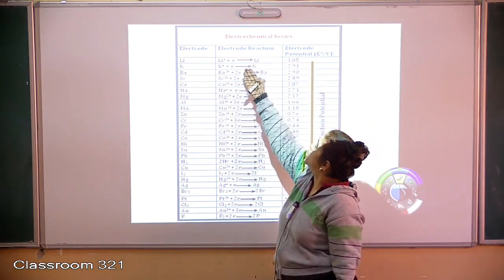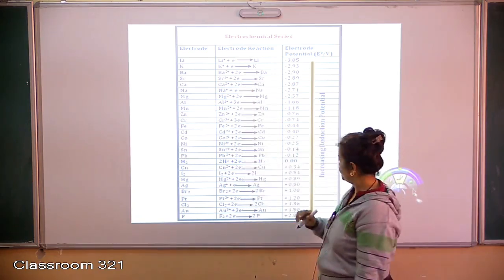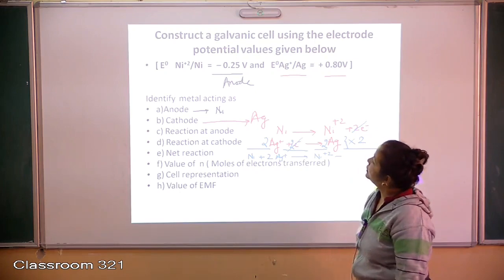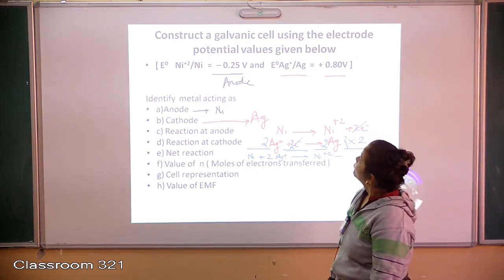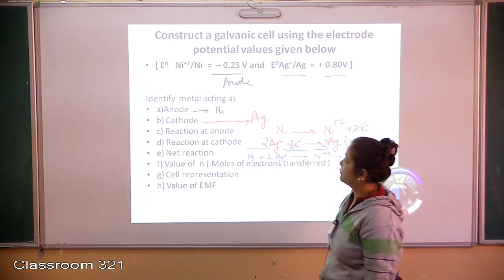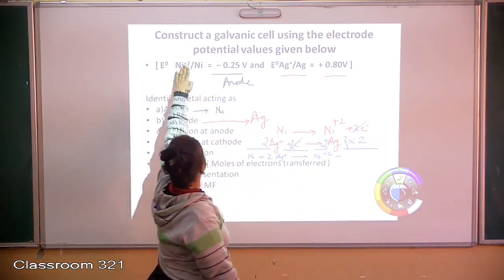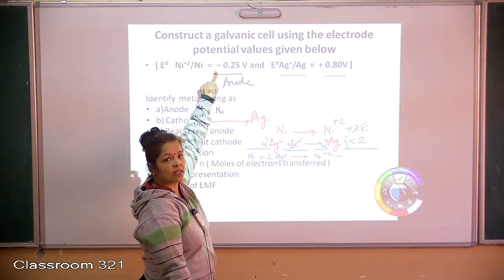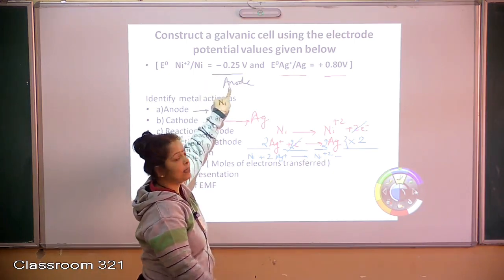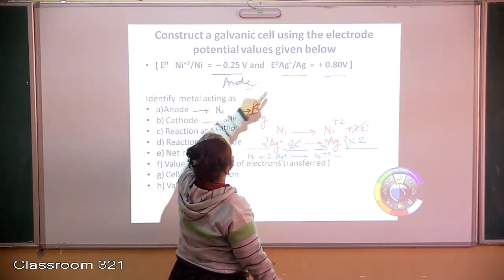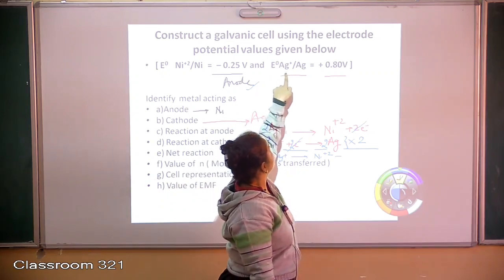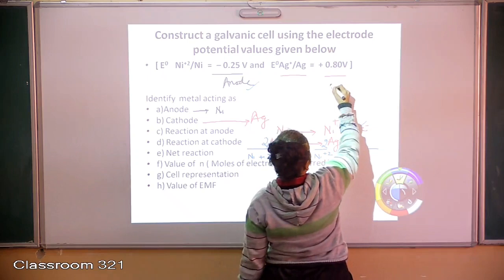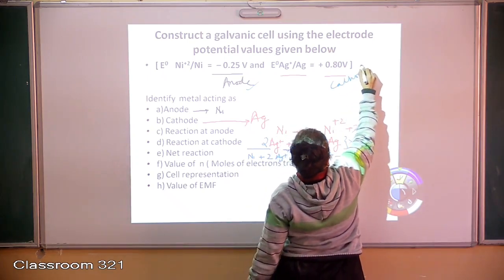I've taken a simple example. For a given galvanic cell, the E° value for Ni²⁺/Ni is minus 0.25. Since the value is negative, it resists reduction, so it should act as the anode. The E° for silver ion is positive, which means it prefers reduction, therefore this becomes your cathode.